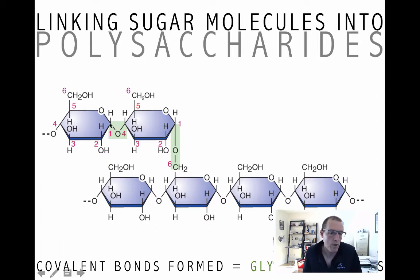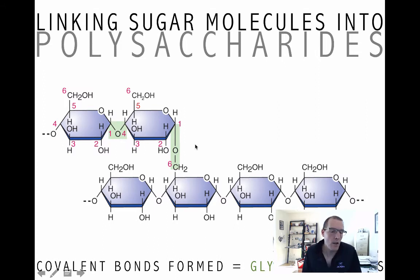There would be chains branching off all over the place on this starch — not as much as glycogen, but still some pretty extensive branching. And so when we form this bond between, for example, the 1-carbon on the glucose on the left and the 4-carbon on the glucose on the right, that's called a glycosidic bond.